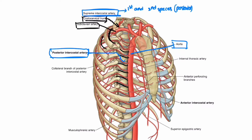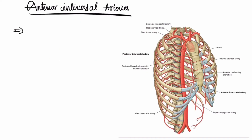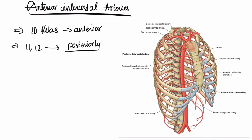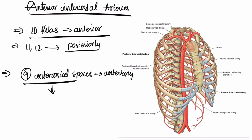Now for the anterior intercostal arteries: we have only 10 ribs coming anteriorly, as the 11th and 12th ribs are present only posteriorly. So with only 10 ribs anteriorly, there are only nine intercostal spaces. These nine intercostal spaces are supplied by the anterior intercostal arteries, which arise from the internal thoracic artery.